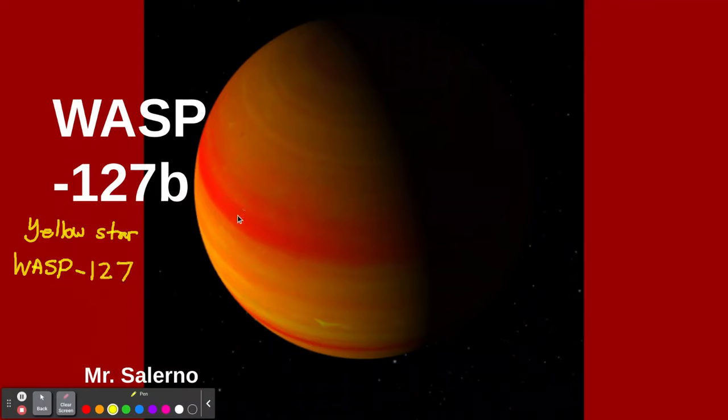This giant planet, bigger than Jupiter, is actually very light. It's one of the lightest planets they have detected so far around a yellow star. Remember, our sun's a yellow star also. WASP-127, the yellow star, is slightly bigger than our sun. And WASP-127b is slightly bigger than Jupiter.